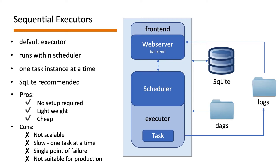The sequential executor is lightweight and cheap because we are not using any resources other than the scheduler itself, which is already running. Because it runs one task instance at a time, it is not scalable, and of course it is slow. It is a single point of failure — all things depend on the scheduler, so if that dies, everything goes down. For all these obvious reasons, it is not suitable for production.